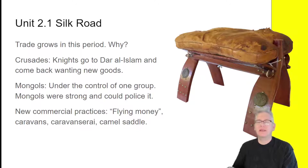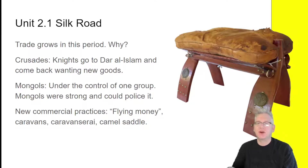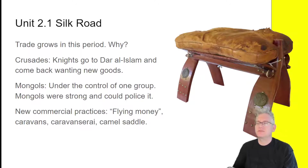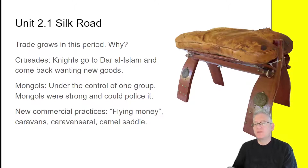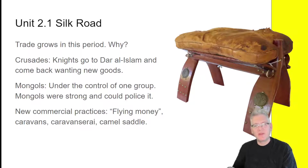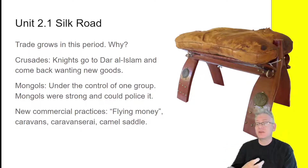Trade grows during this period. Why? First, the Crusades. The knights go to Dar al-Islam, the Middle East and the Holy Land, and come back wanting new goods — new spices, new flavors, textiles and things like that. When they get back to Europe, they want more. Another factor is the Mongols. When the Silk Road is under one group, they have a much better ability to police it. When the Mongols are really strong, they keep their territory under control with a lot less piracy.